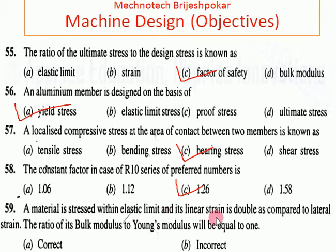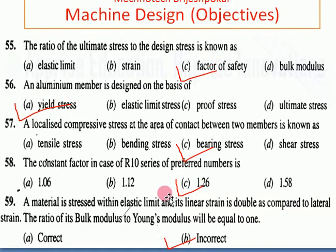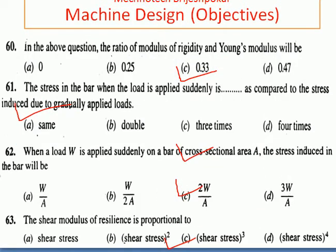The material is stressed within the elastic limit and its linear strain is double compared to the lateral strain. The ratio of bulk modulus to Young's modulus — the answer is not equal to 1 when the linear strain is double compared to the lateral strain.